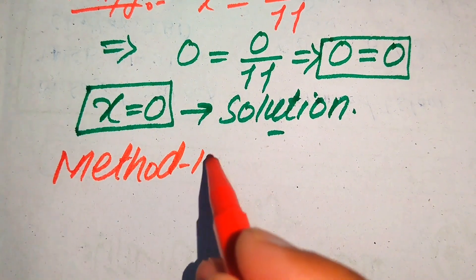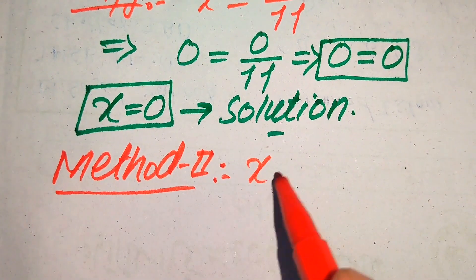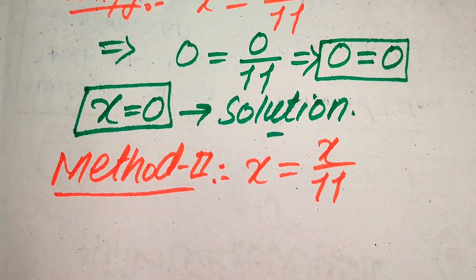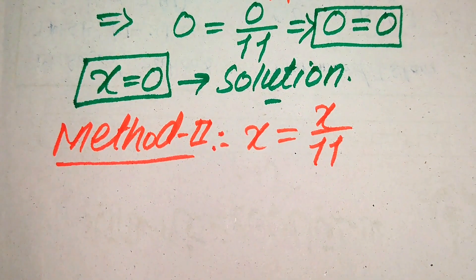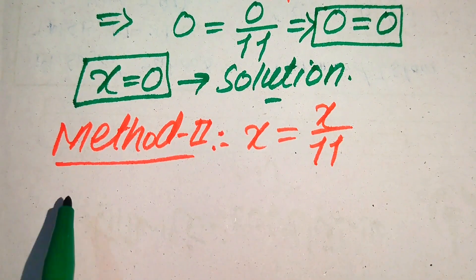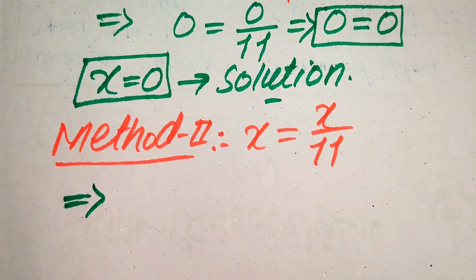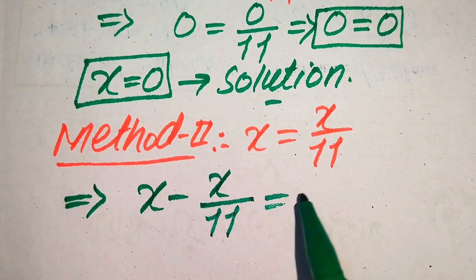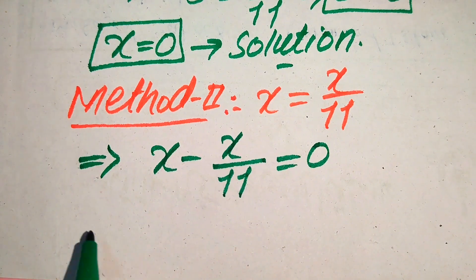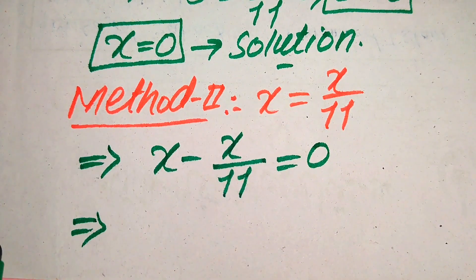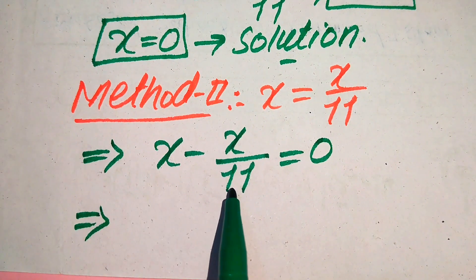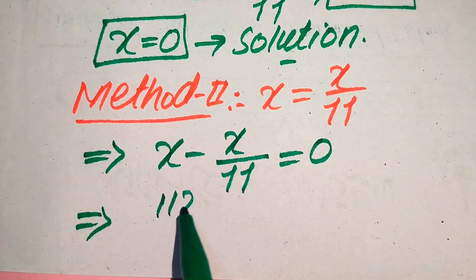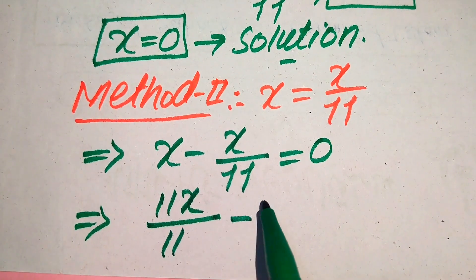Now we move towards our second method. The given equation is x equals x divided by 11. In the second method, I give you a nice technique to find the value of x. First we move x over 11 to the left hand side, giving x minus x over 11 equals 0. We make the denominators of both terms the same — the denominator of the first term is 1 and the second is 11 — so we multiply the first term by 11, giving 11x divided by 11.